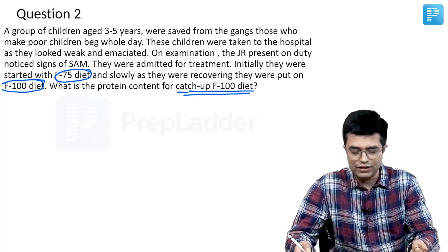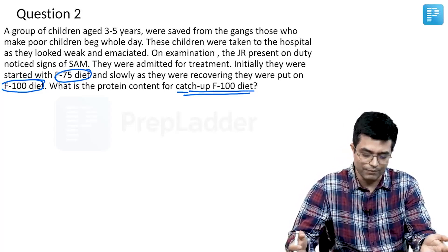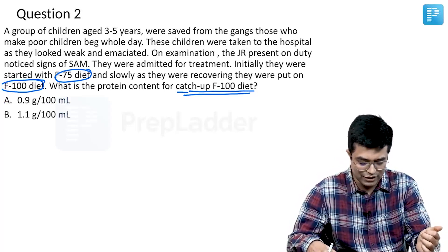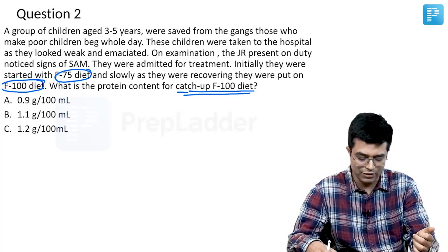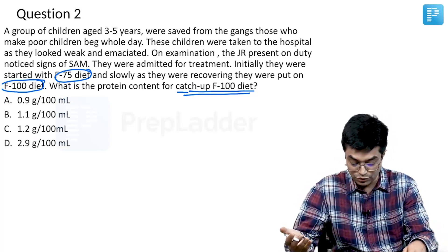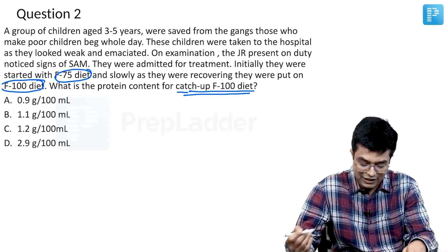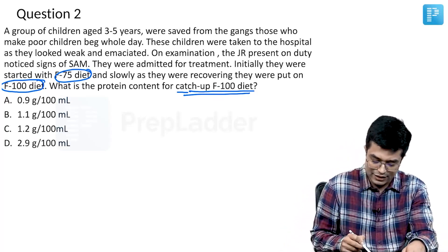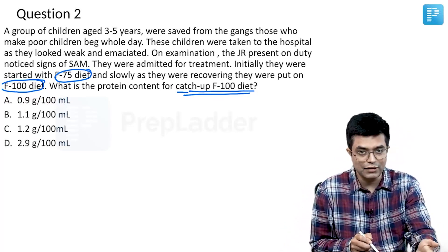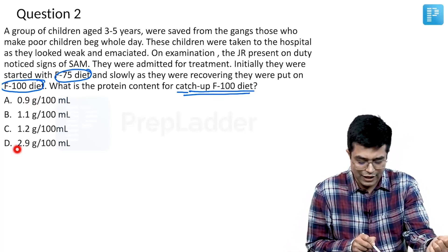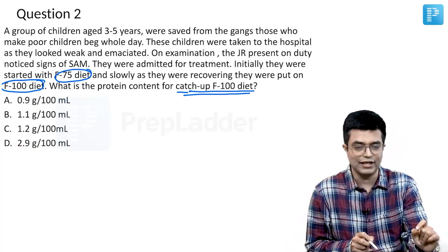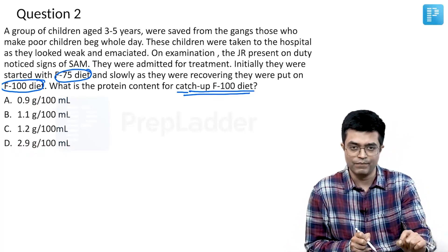Basically they are asking about F100 diet composition. The options are 0.9 gram per 100 ml, 1.1, 1.2, and 2.9. You know that F75 diet has a content of 0.9 gram per 100 ml, and 2.9 gram per 100 ml is that of F100.